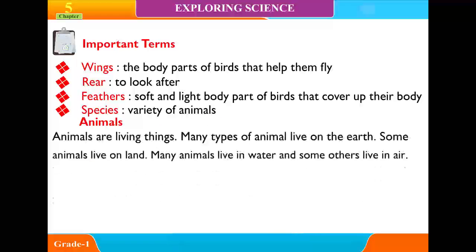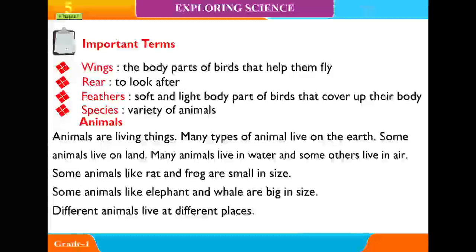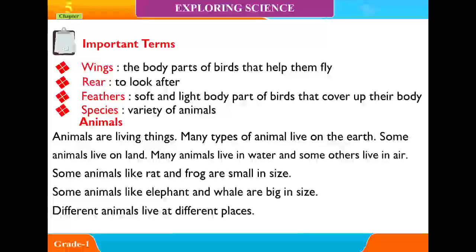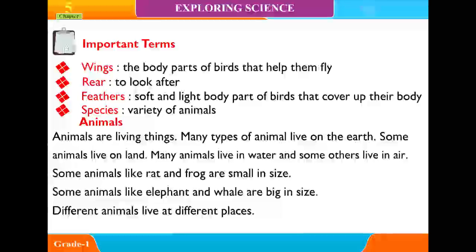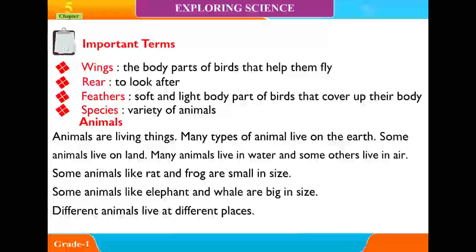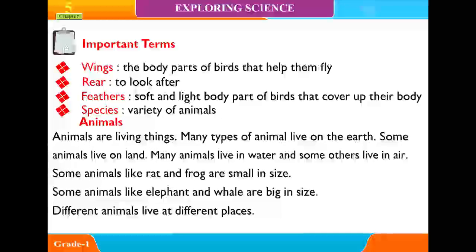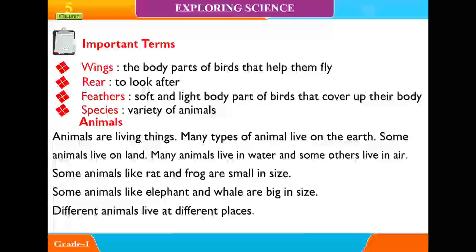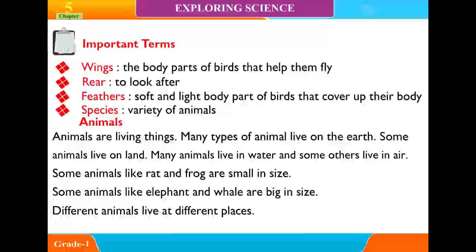Animals are living things. Many types of animals live on the earth. Some animals live on land. Many animals live in water and some others live in air. Some animals like rat and frog are small in size. Some animals like elephant and whale are big in size. Different animals live at different places.